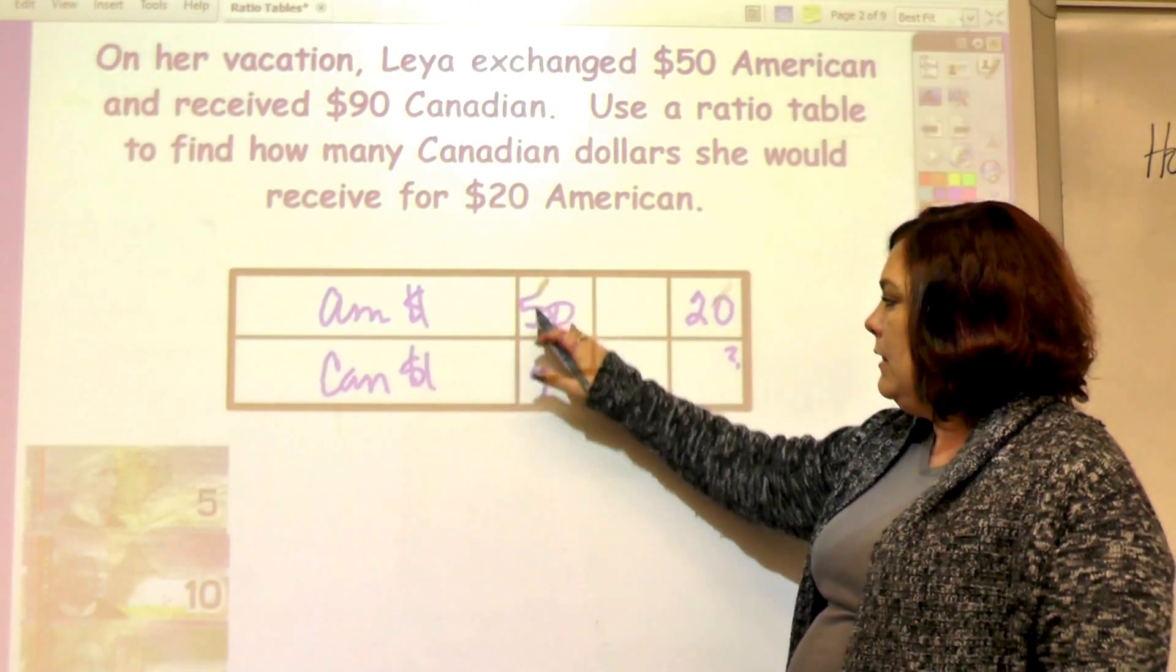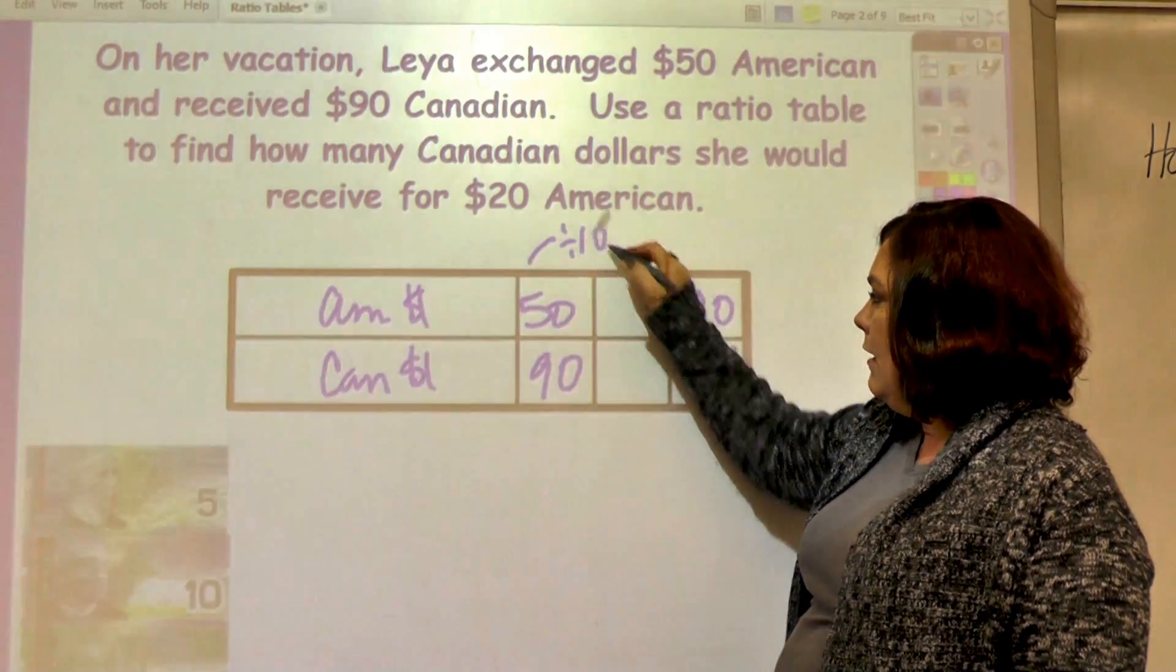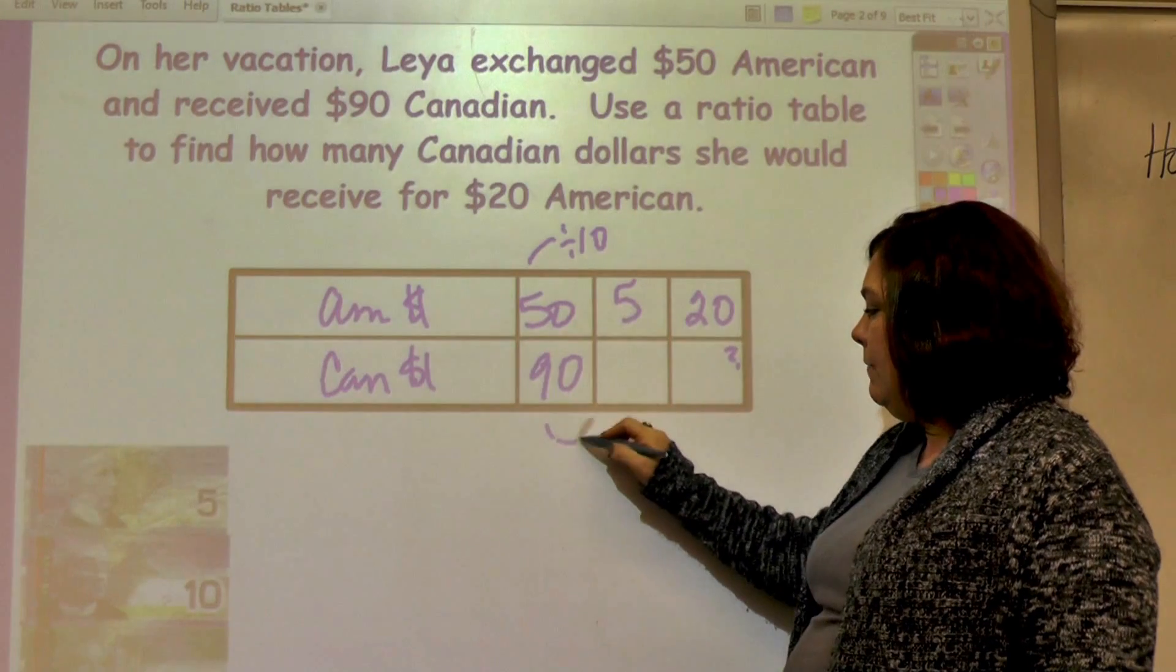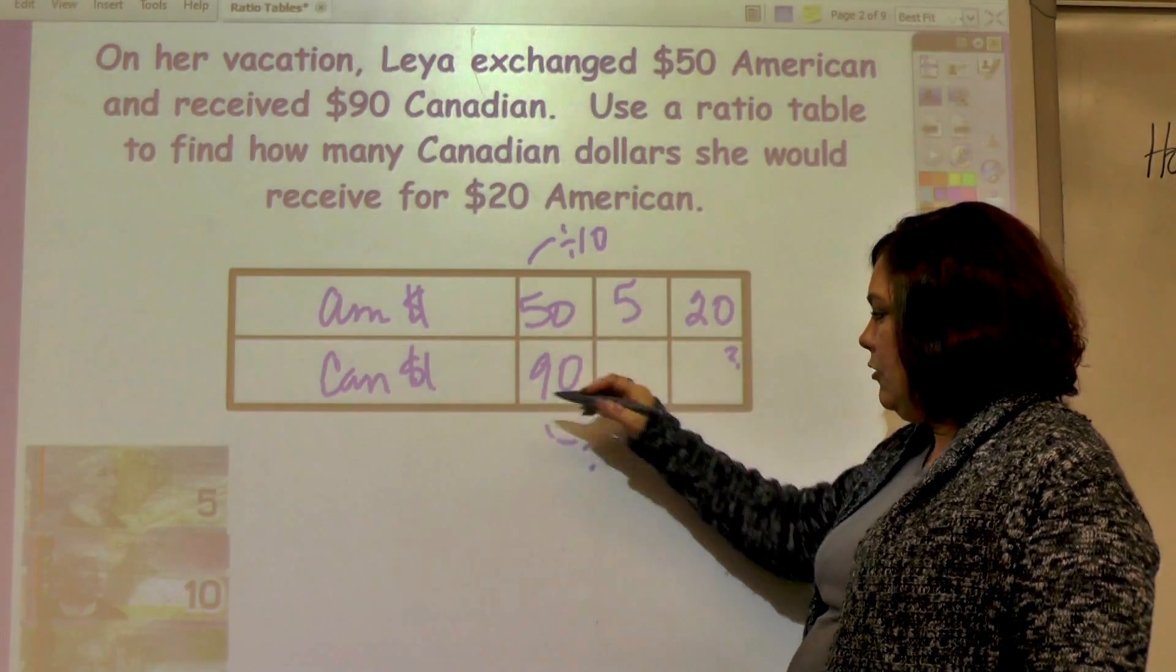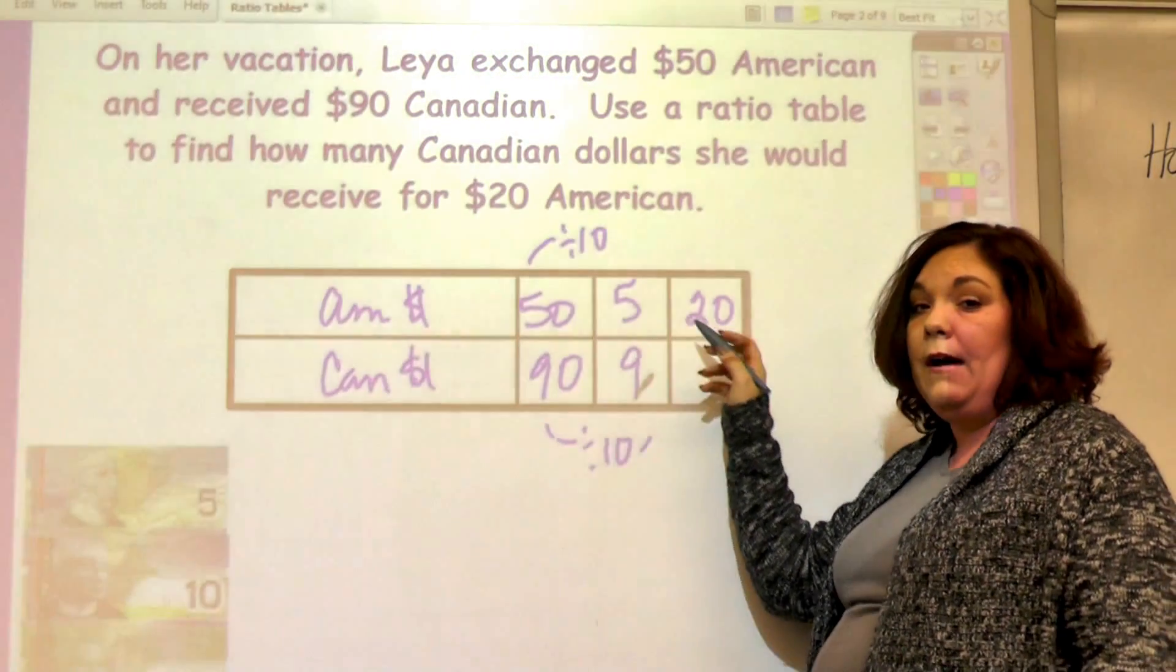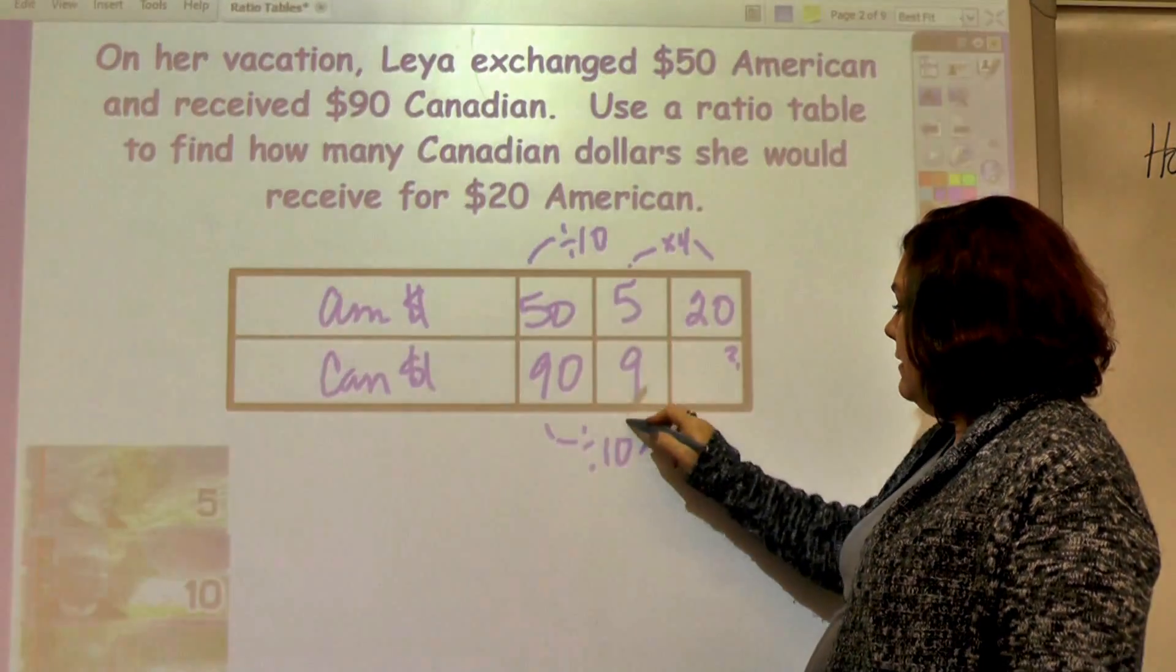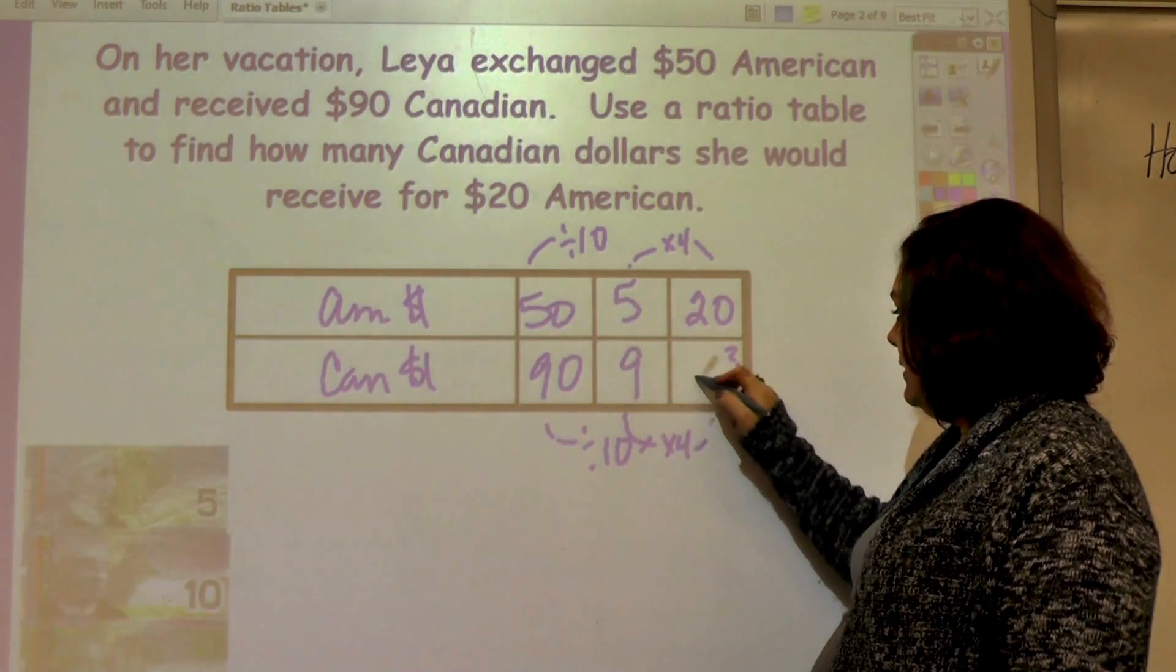Both of these are divisible by 10, so I divide by 10 and I get 5, and divide by 10, that's the same as dropping a zero, and I get 9. Now I can get from 5 to 20, that's times 4, and 9 times 4 is 36.